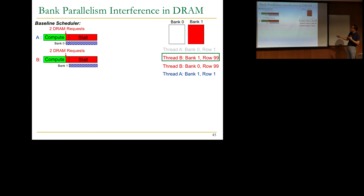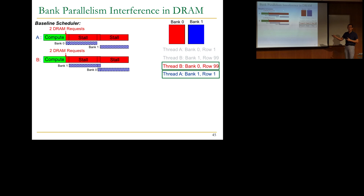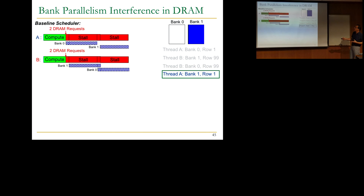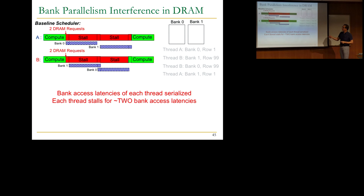Now let's see what happens with two threads running together. They both generate two DRAM requests each. Assuming first-come first-served order: thread A's request to bank 0 is scheduled, then thread B's request to bank 1 — and while these are going on, the threads stall. After that request is serviced, thread B's request to bank 0 is scheduled next. Eventually thread B's request to bank 1 is scheduled. Because the memory controller serviced the requests this way, both threads stalled for approximately two bank access latencies — their request latencies were serialized.